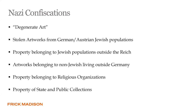These confiscations generally included degenerate art and private property of Jewish and non-Jewish people in and outside of the Reich and Germany, as well as religious and state organizations. Categories included: degenerate art, Jewish populations in Germany and Austria, Jewish populations outside the Reich, non-Jewish people living inside or outside Germany, and property belonging to religious organizations and state and public collections. Today we're focusing on confiscated European art rather than Judaica, but the Nazis also looted Judaica and non-Western collections as well.